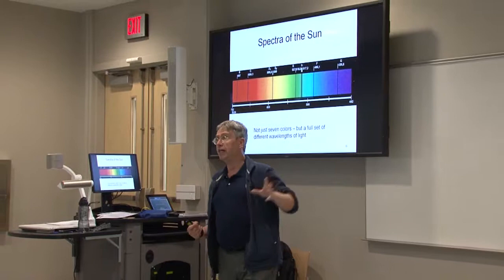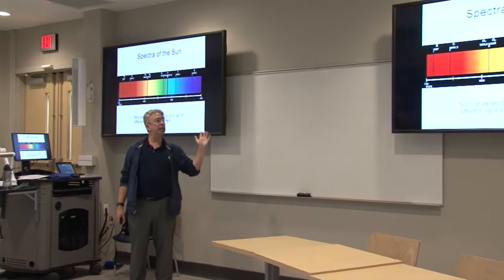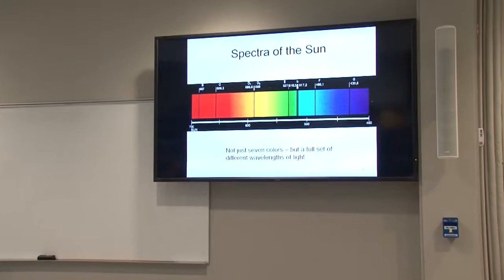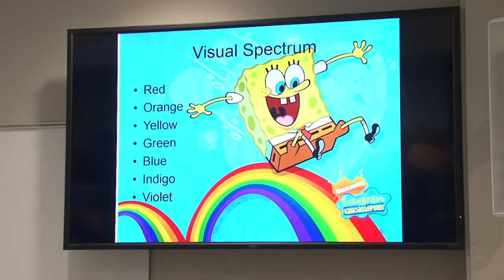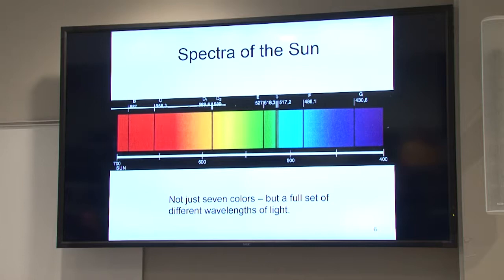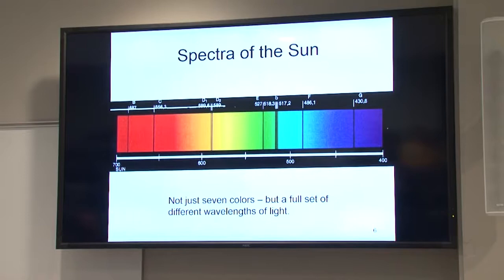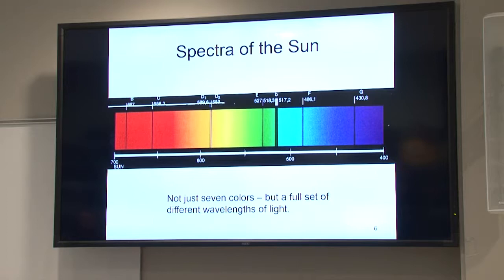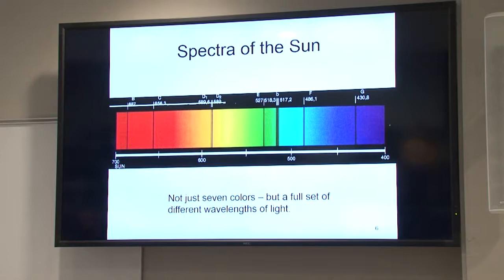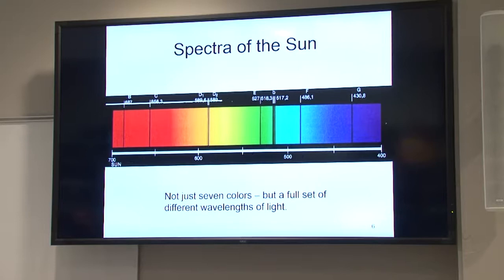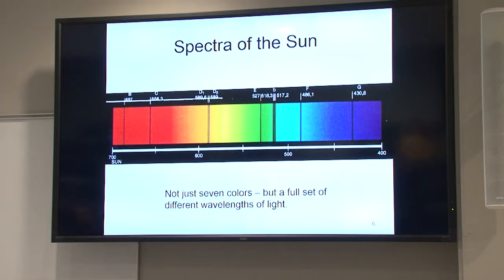This is actually the spectrum of the sun. On the left side we have reddish colors, on the right side purplish colors, and there's a continuous set of colors. You'll also notice lines in it — these are called absorption lines. They're formed in the cooler part of the sun's atmosphere just above the surface, in the chromosphere. Some of the light gets absorbed and then re-emitted in different directions. By looking at those spectral lines, we can tell a lot of things — we can measure how fast the sun or other stars are moving towards us or away from us, measure the composition, and even the temperature.